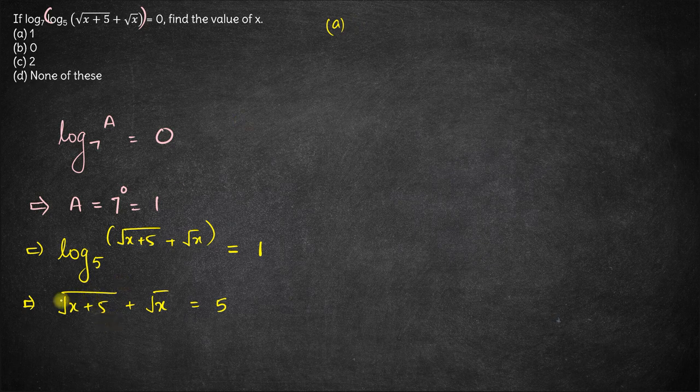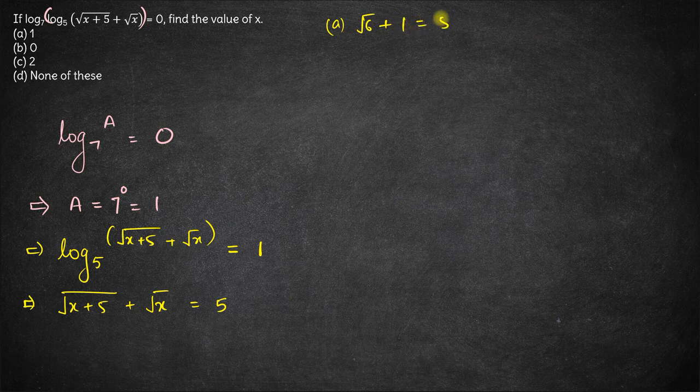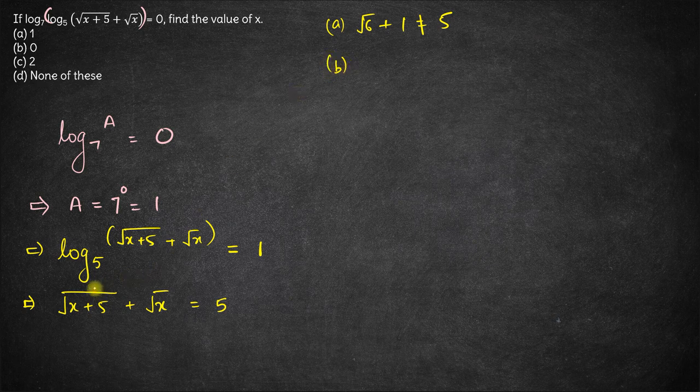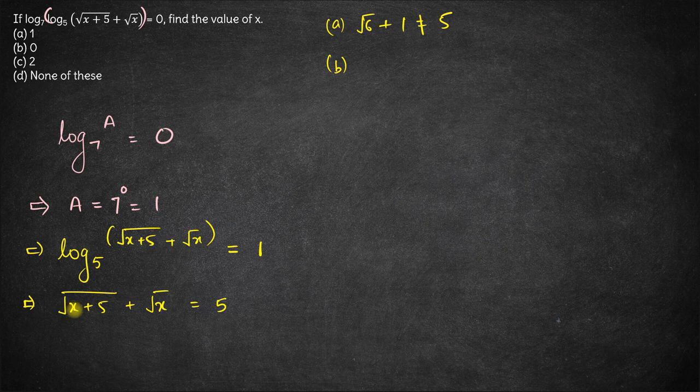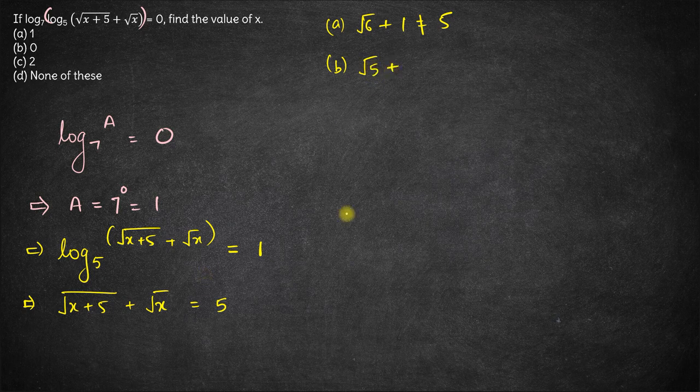Option a which is 1. So we'll have root of 1 plus 5 is root 6 plus root of 1 is 1. Is it equal to 5? No it is not equal to 5. Hence option a is rejected. Option b, x is 0, so root of 0 plus 5 is root 5 plus root of 0.